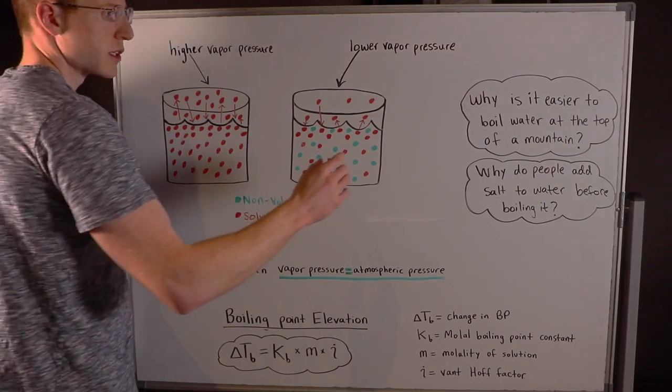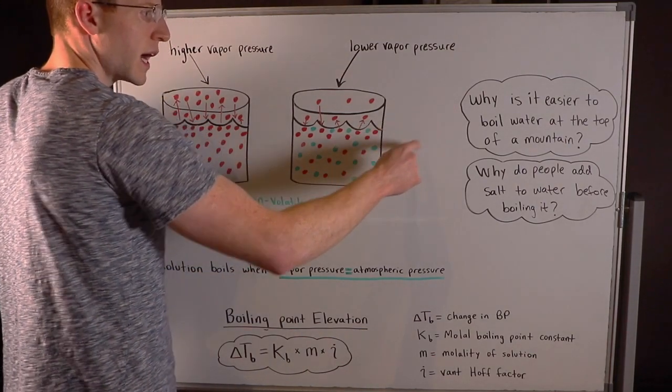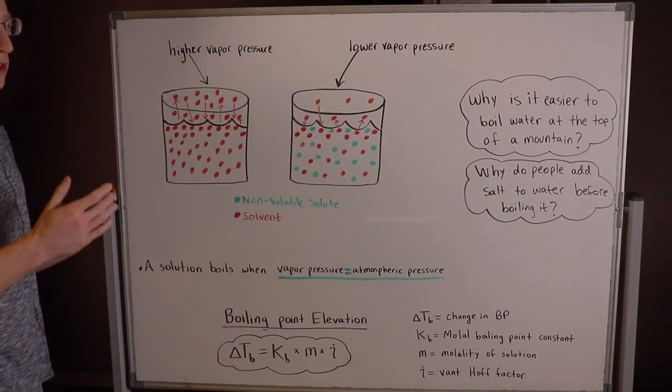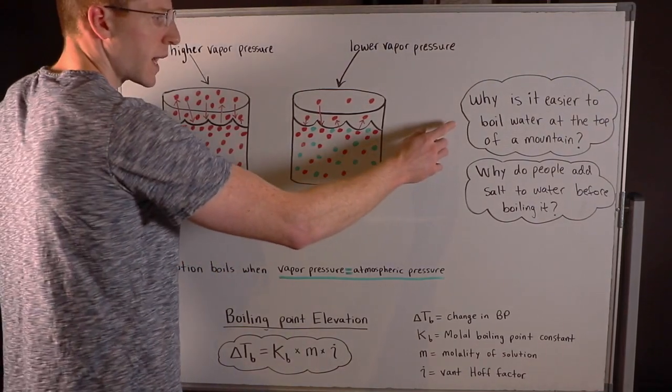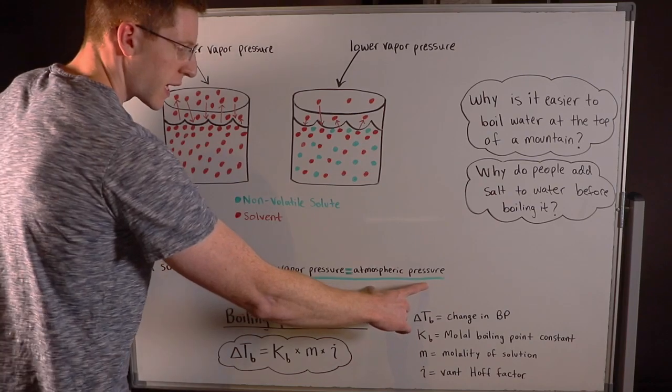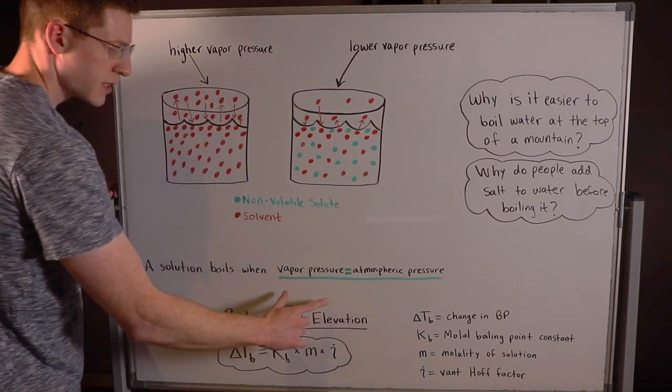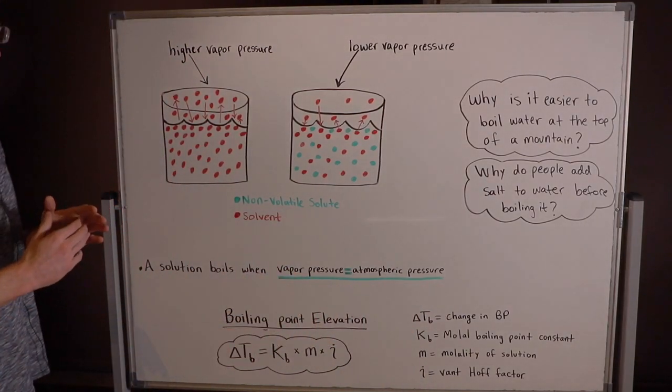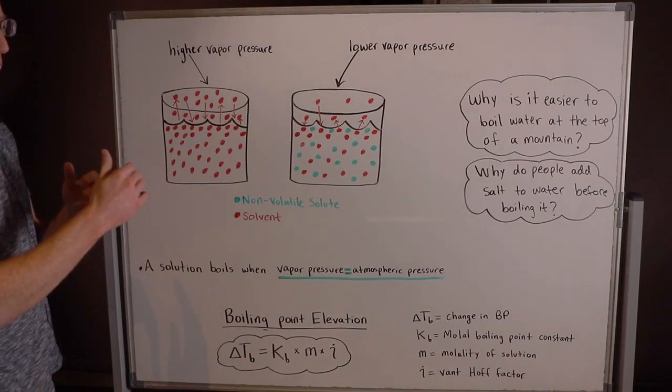So this brings up some interesting questions. You may have heard that it's actually easier to boil water at the top of a mountain. Why is that? Well at the top of the mountain, atmospheric pressure is actually very low. That means it's easy for vapor pressure to reach atmospheric pressure and begin boiling.